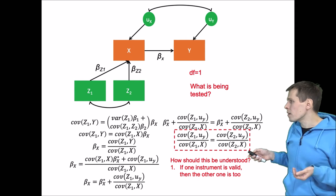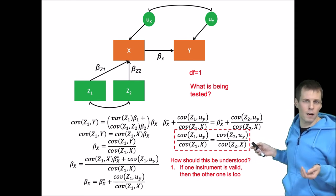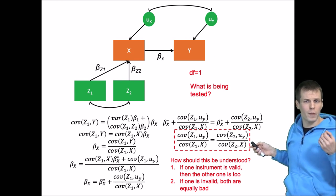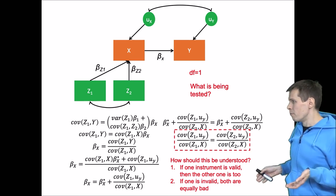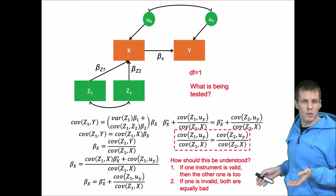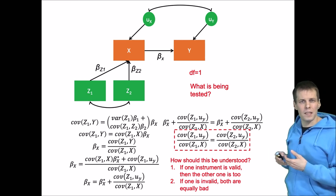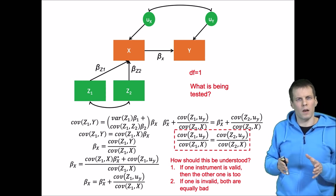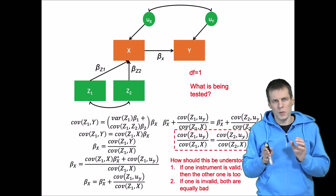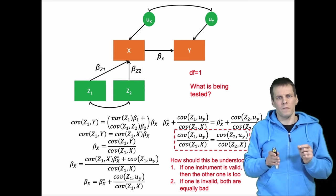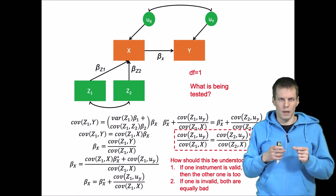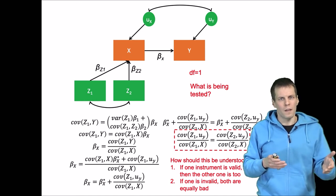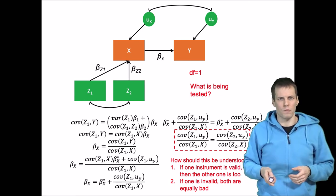Another way of understanding this is that if one of them is correlated with the error term, if one of them is invalid, then both are equally bad. So these tests for exclusion don't really test whether the instruments are excluded in the absolute sense, but they test if the instruments are equally good. And if one of them is known to be valid, then we can infer that the others must be too.